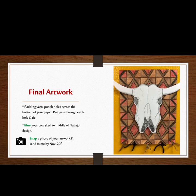For your final artwork, if adding yarn, punch holes across the bottom and top of your paper and put the yarn through the hole and tie. Glue your cow skull to the middle of the Navajo design. Snap a photo of your finished artwork and send it to Mrs. Hughes by November 20th. You have a few weeks to work on this project.